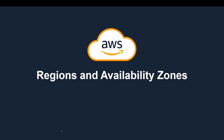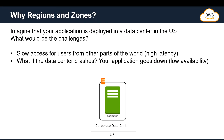Hi everyone, welcome back to another lecture. In this lecture we are going to discuss about regions and availability zones in AWS. These are two basic terminologies that we need to know, but most of us get confused when we hear these terms. If someone asks why we need regions and availability zones, many won't be in a position to answer it. This was actually one of my interview questions.